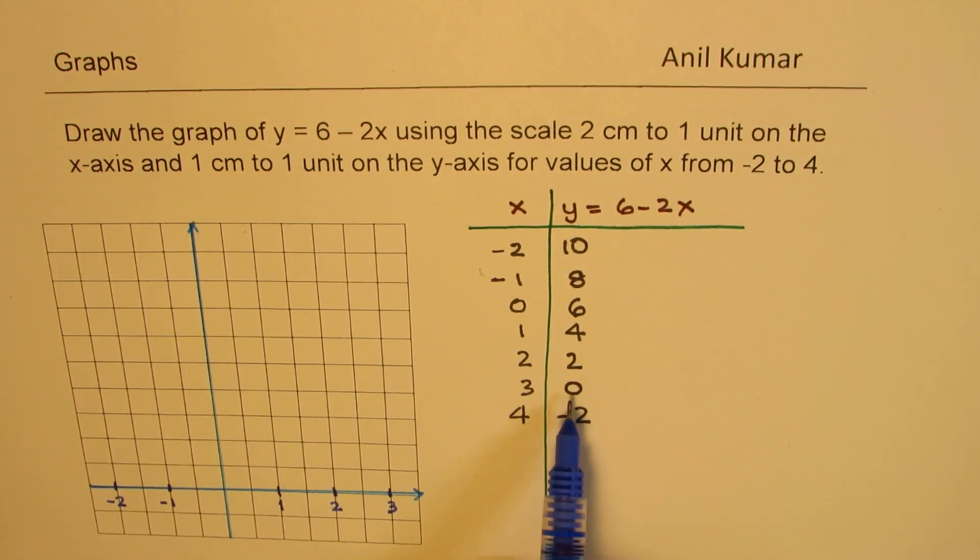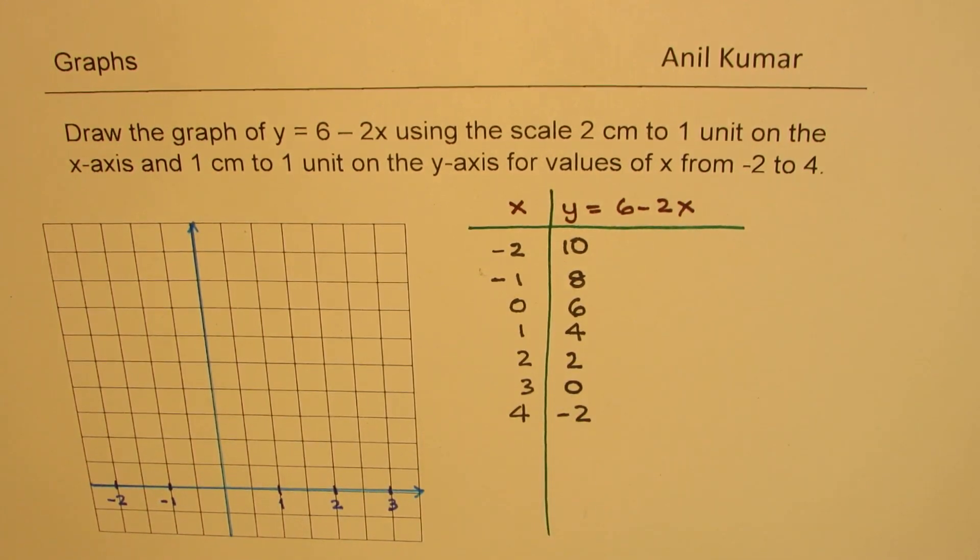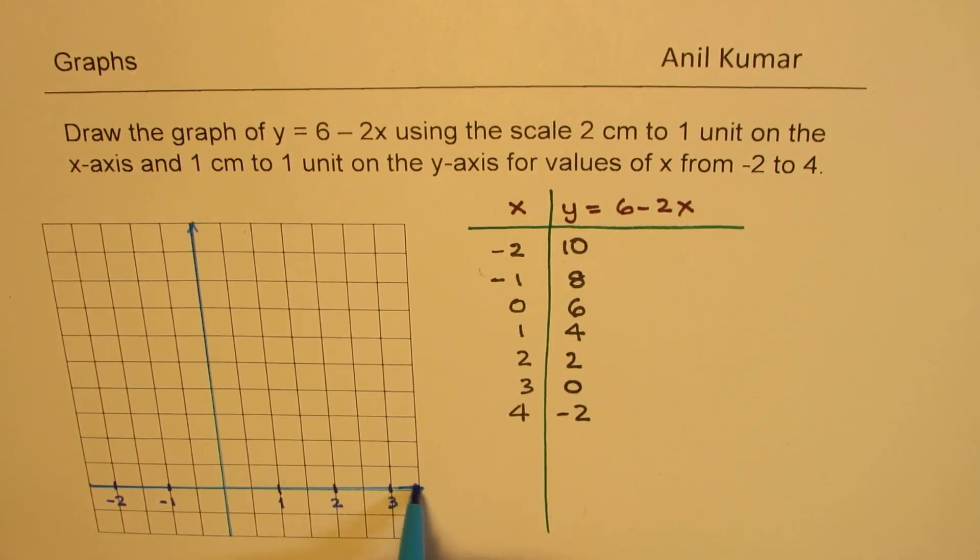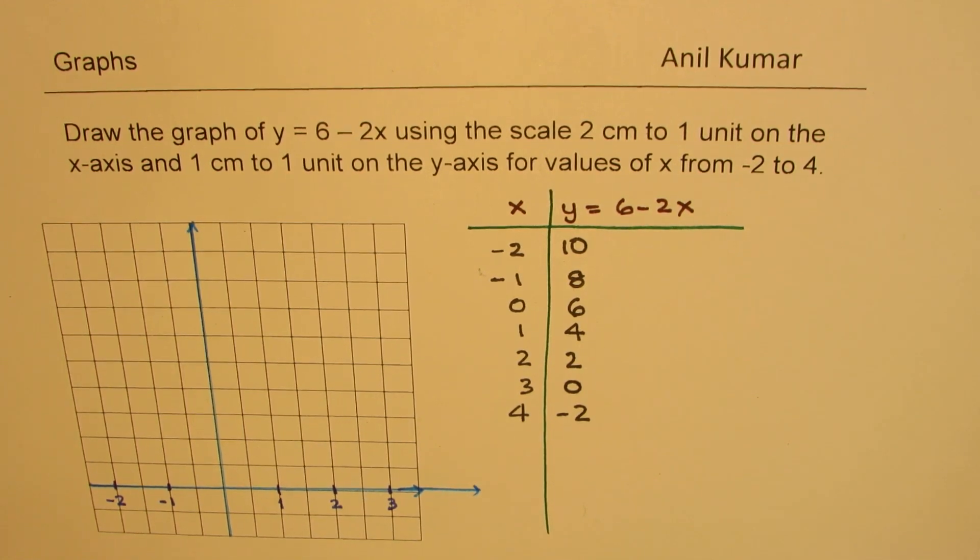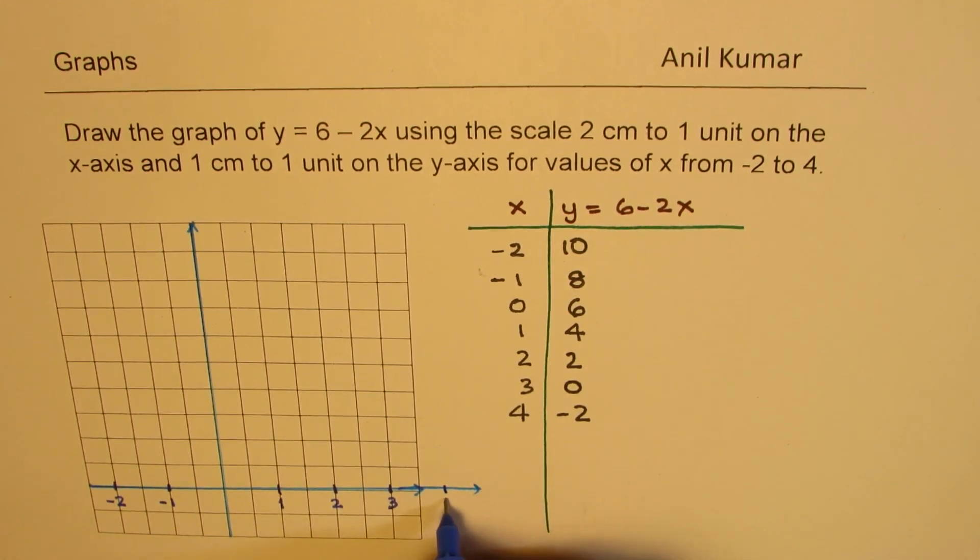So at 3, it is 0. So I'll not be able to plot this point, 4, or we may just extend this, no problems. So if I extend this, so we have 4 right there. So we can now plot the points.